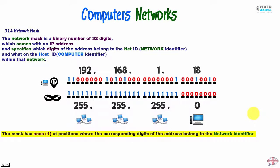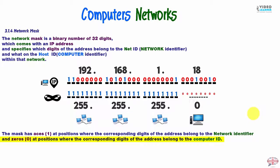The mask has Aces at positions where the corresponding digits of the address belong to the Network Identifier, and zeros at positions where the corresponding digits of the address belong to the Computer ID.